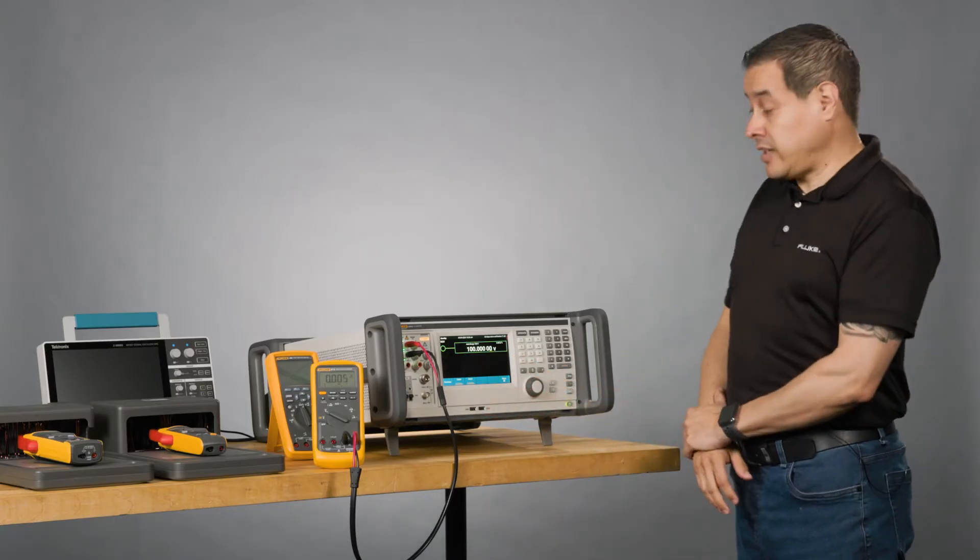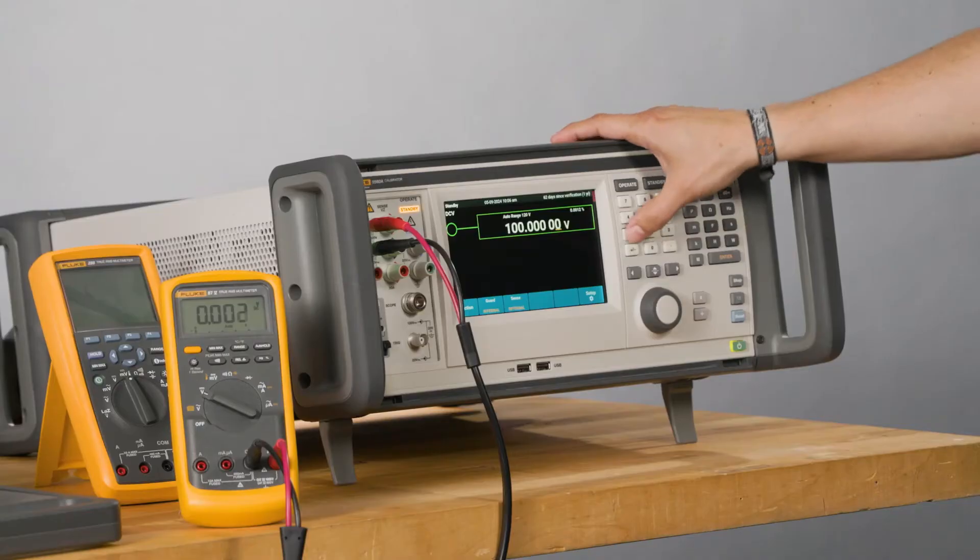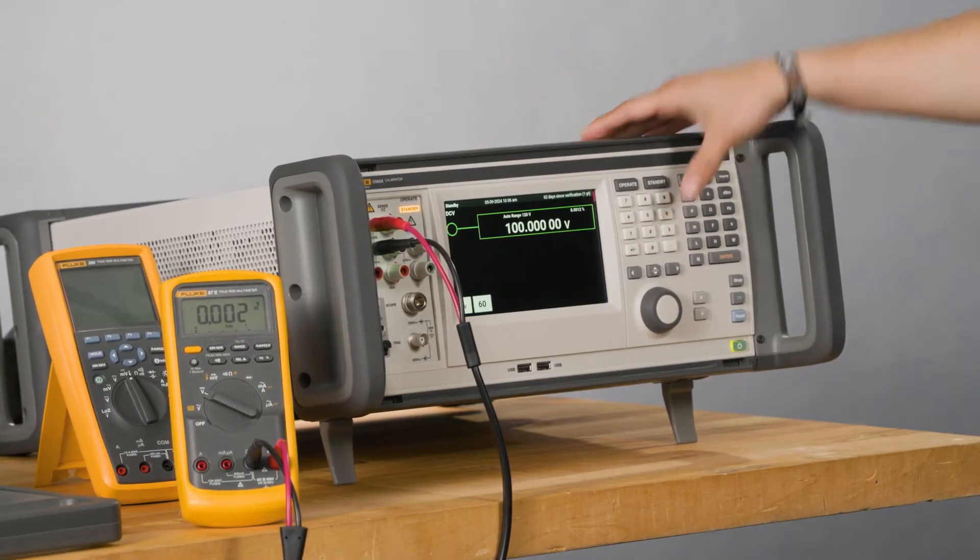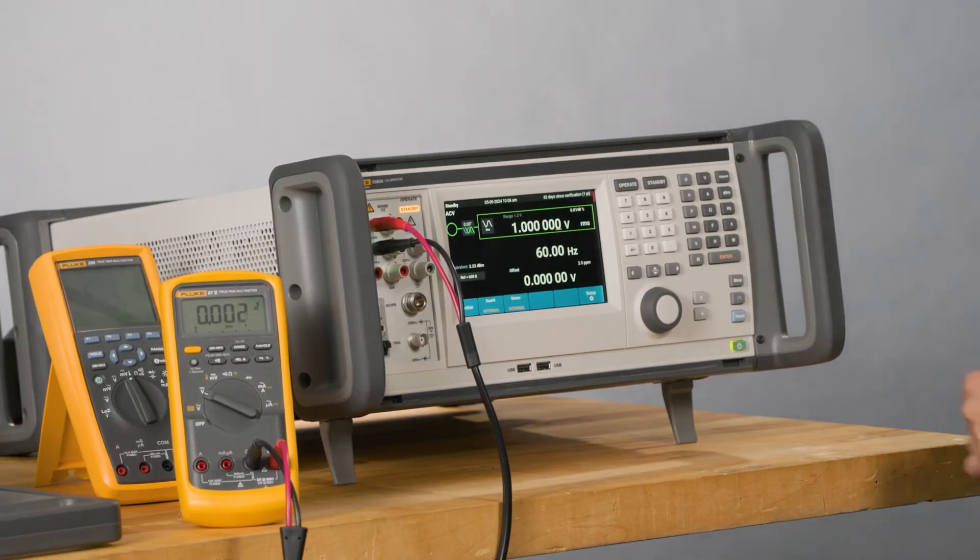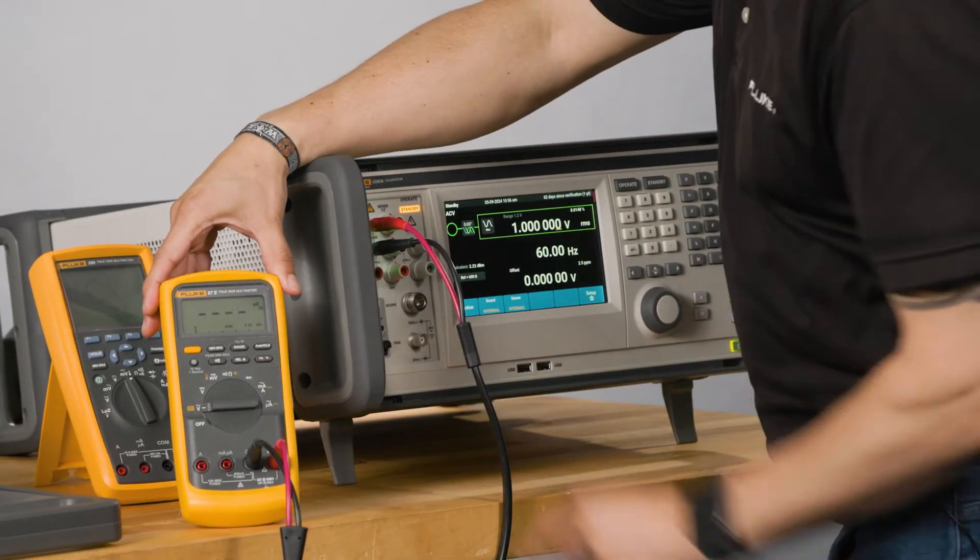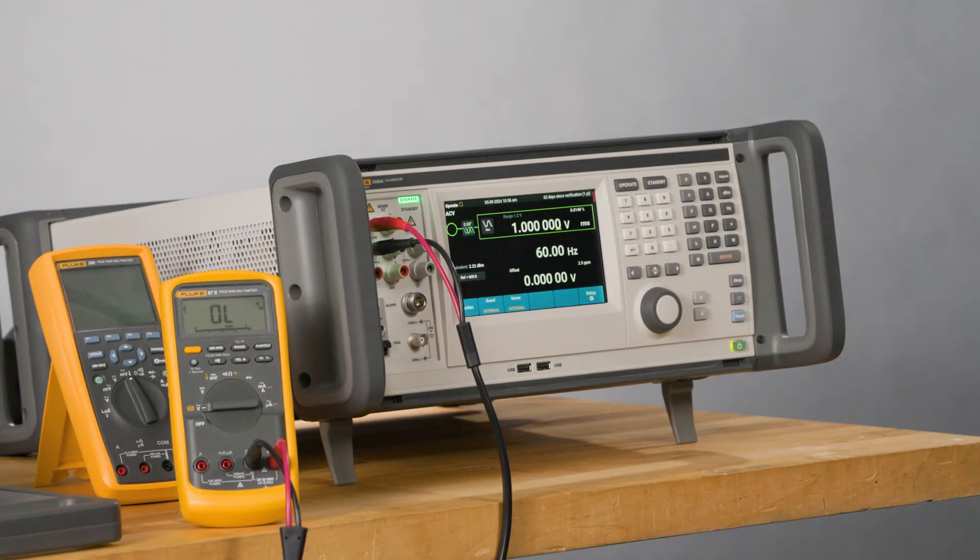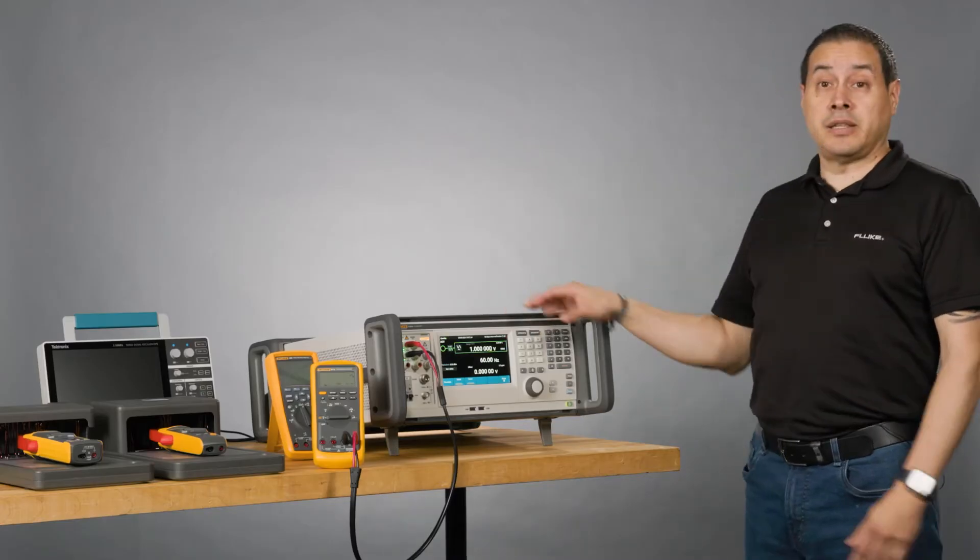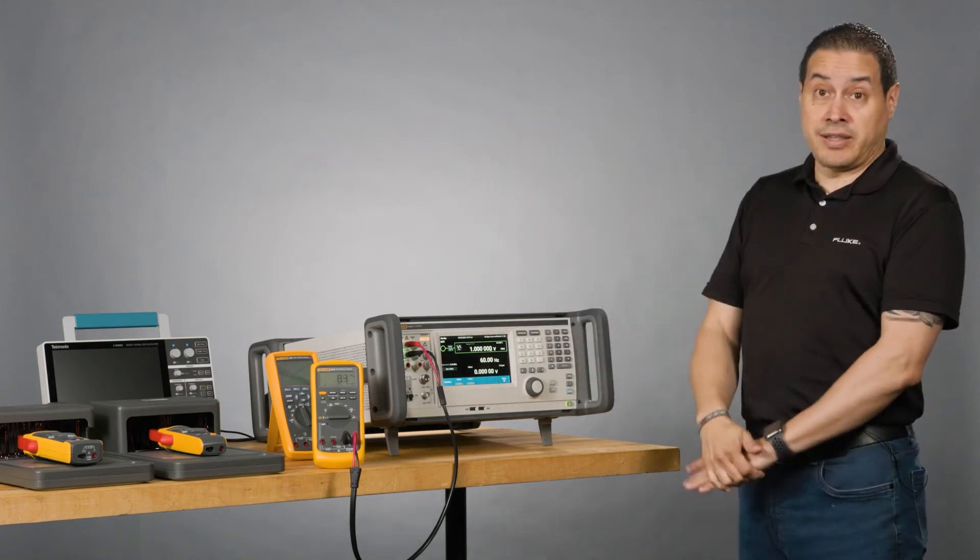Now I'm going to jump to ACV. In this case, I don't need to change the cables. So one volt, 60 hertz. Enter. And then I need to change my knob to ACV. I got one. You need to wait to stabilize. And then same process that I did in DCV. Jump to the calibration point that the manufacturer indicates.